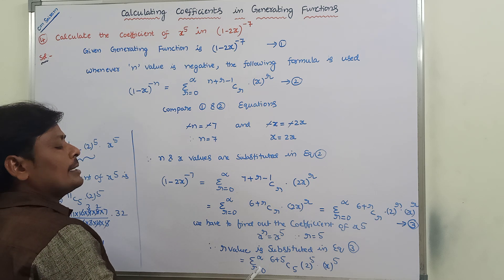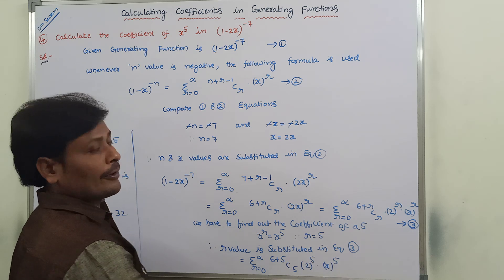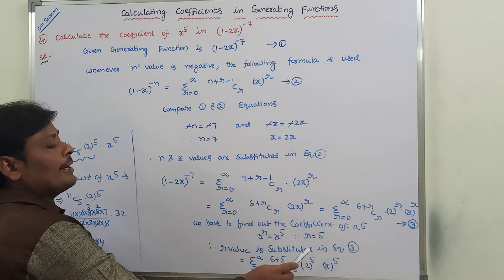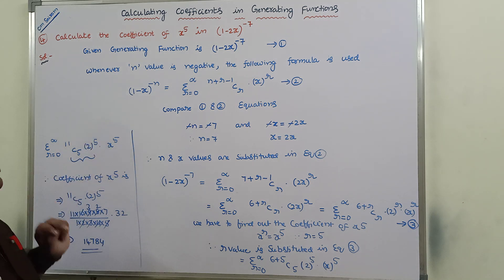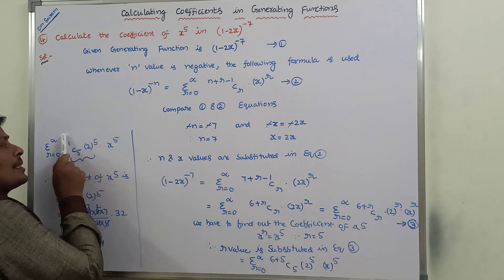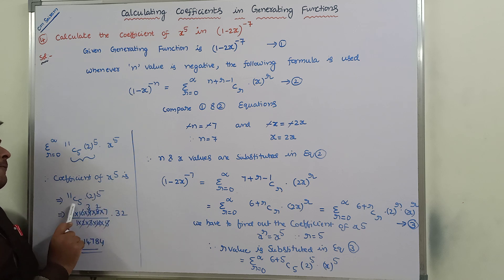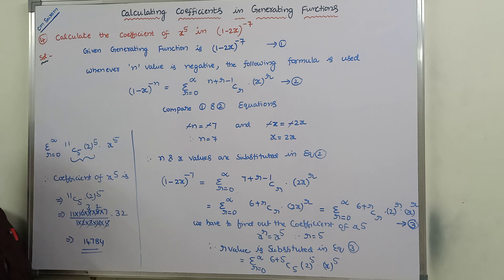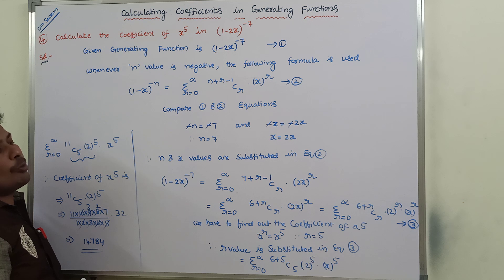Substituting r equal to 5 in equation 3: (6 plus 5) C 5 into 2 power 5 into x power 5, which is 11 C 5 into 2 power 5. So the coefficient of x power 5 is 11 C 5 into 2 power 5, and the final answer is 14,784. This is the coefficient of x power 5 in (1 minus 2x) whole power minus 7.